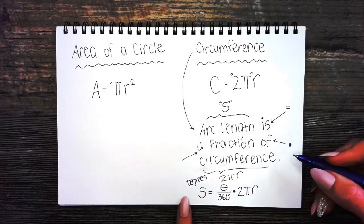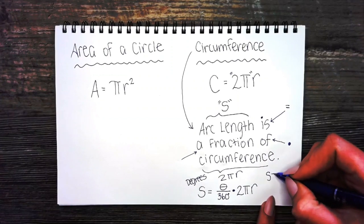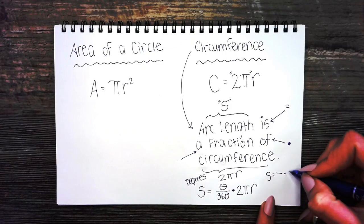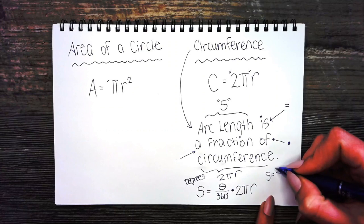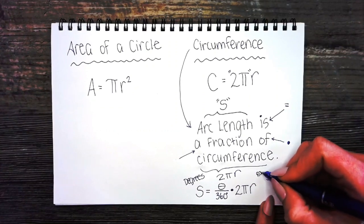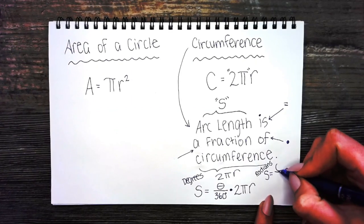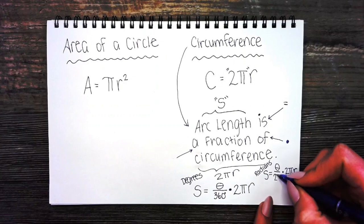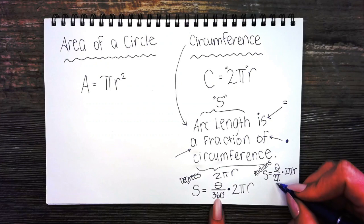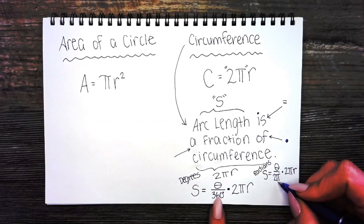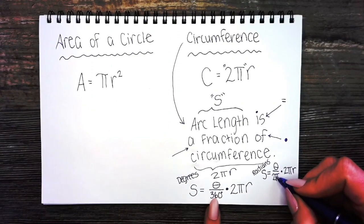What does that tell us about our arc length formula? Arc length is a fraction of circumference. The angle, if we're dealing with radians, will be theta over 2 pi. Because 2 pi radians is 360 degrees. Just like 12 inches is equal to 1 foot.